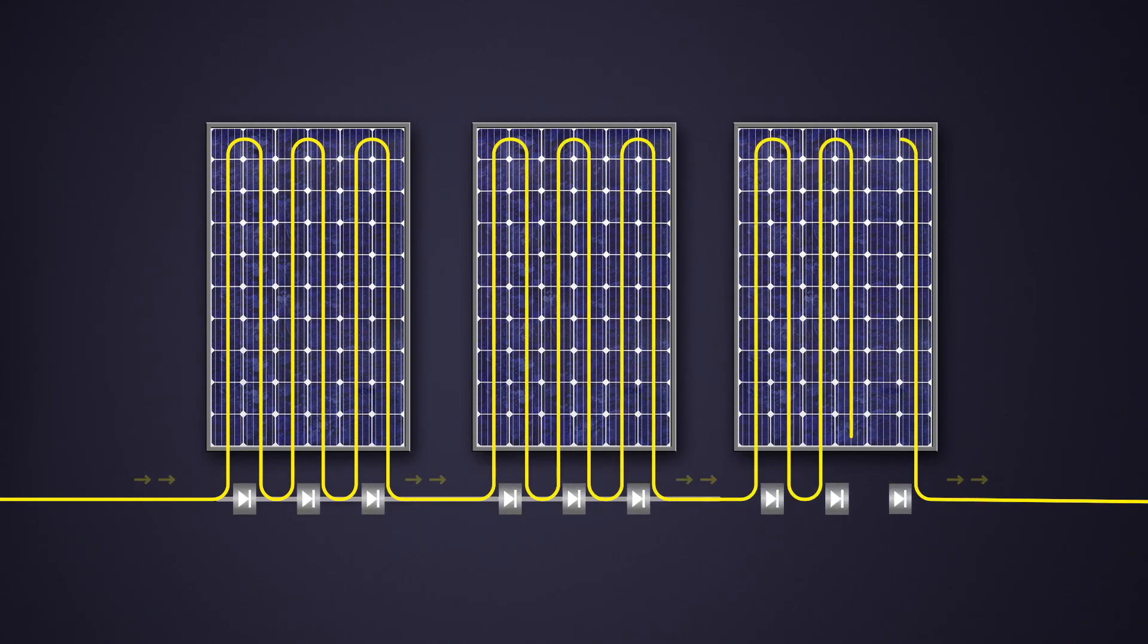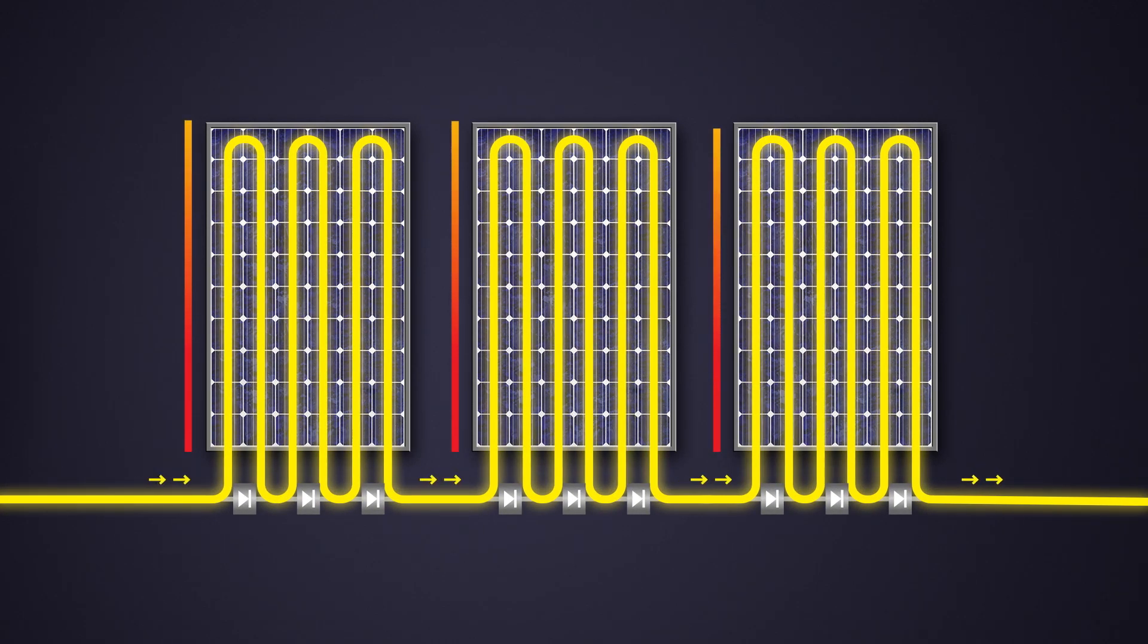In case of an unshaded PV array, all the PV modules will produce full power. Their bypass diodes are not active.